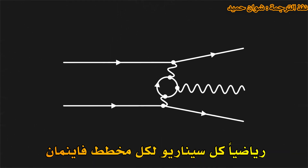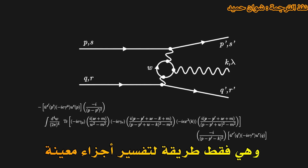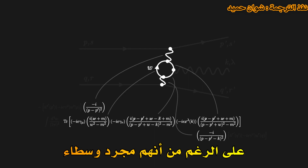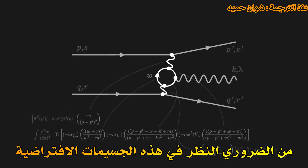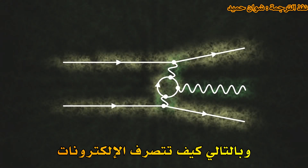Apart from the initial and final particles, which are real particles that can be detected, the particles that act as messengers within these diagrams are said to be virtual. These are particles that cannot be detected and they can exhibit some rather strange properties. They only serve as intermediaries to describe how our two electrons interact at a distance. Mathematically, each scenario — each Feynman diagram — corresponds to a very rigorous equation, and virtual particles are only a way of interpreting intuitively certain parts of the equations. Although they are only intermediaries resulting from our mathematical model, it is essential to consider these virtual particles, because they account for the interactions of the fields, and therefore how electrons behave.